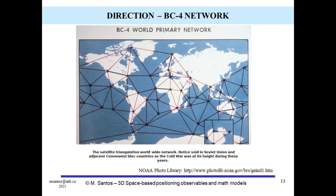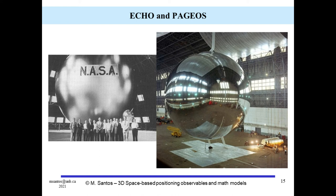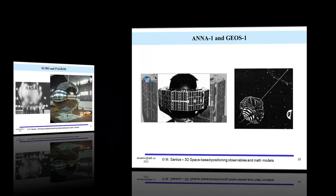As we mentioned before, the very first global geodetic network was established using direction to satellite. This network was known as the BC-4 network, a name given from the instrument used — the BC-4 camera. A series of satellites were launched in support of satellite photography. Initially, passive balloon satellites were used, such as the experimental communication satellites ECHO-1 and ECHO-2 during the 1960s. In 1966, a dedicated satellite was launched in support of the BC-4 network — the PAGEOS satellite — itself also a passive balloon satellite.